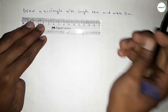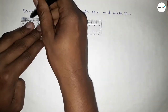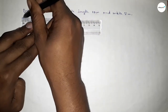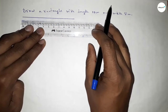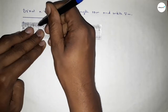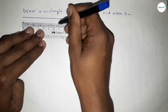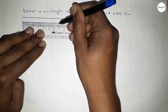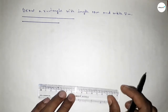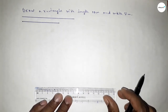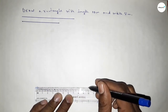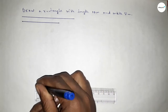First of all, we have to draw a line of length 10 centimeter. So this is 10. Then we have to draw another line of length 7 centimeter — 0, 1, 2, 3, 4, 5, 6, 7. First, we draw the line of length 10 centimeter, so this is 10.